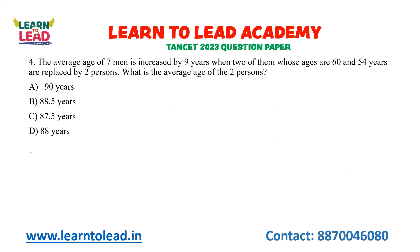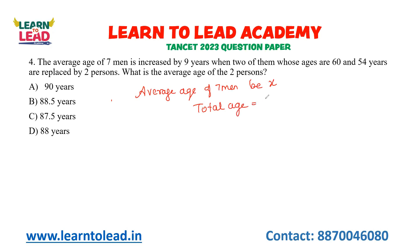The average age of 7 men is increased by 9 years when 2 of them, whose ages are 60 and 54 years, are replaced by 2 persons. What is the average age of the 2 new persons? Let us take the average age of the 7 men as X. Then the total age is 7X. We remove ages 60 and 54 and add the ages A and B of the 2 new persons.